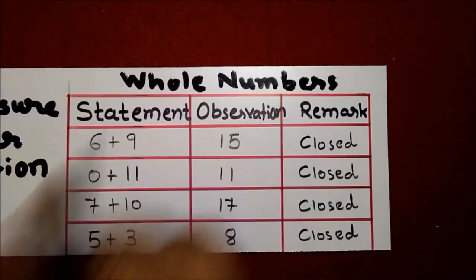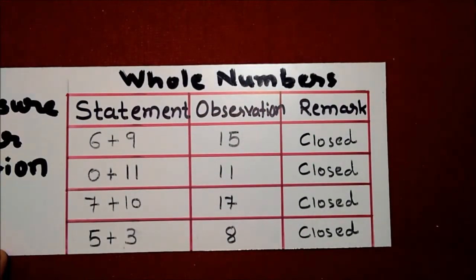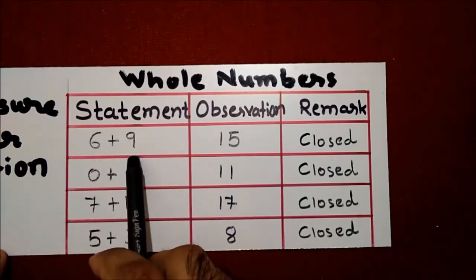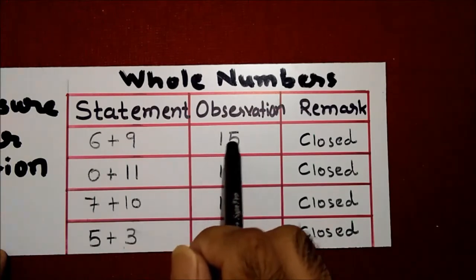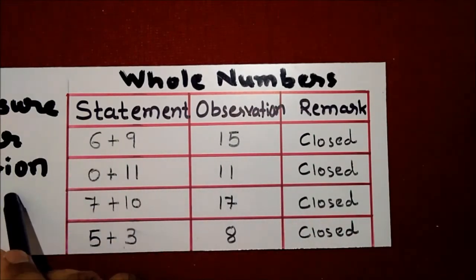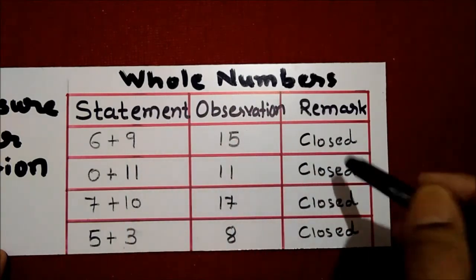So we can say that the addition of two whole numbers is always a whole number. And therefore, closure under addition for whole numbers is closed.